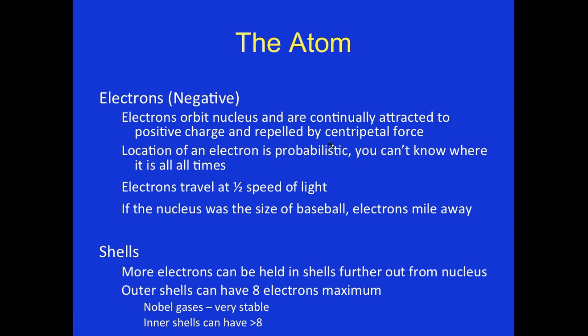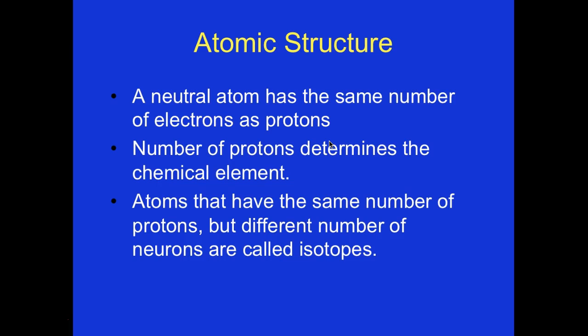More electrons can be held in shells further out from the nucleus. Outer shells can have a maximum of eight electrons. A neutral atom has the same number of electrons and protons. The number of protons determines the chemical element. Atoms that have the same number of protons but different numbers of neutrons are called isotopes.